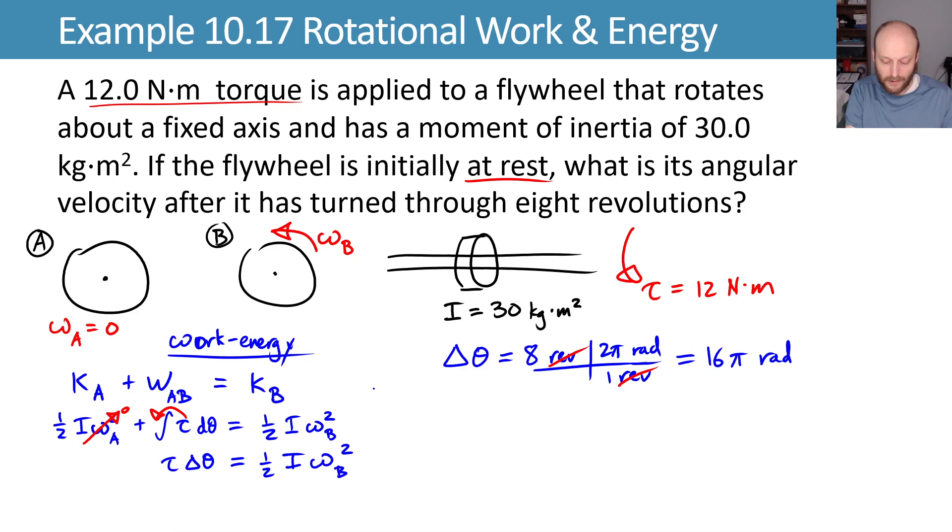That's one equation with one unknown. The only thing we don't know is omega B. We know I, we know torque, we know delta theta. We'll solve that for omega B by multiplying by two, dividing by I, and then taking the square root. That leaves us with omega B equals the square root of two torque delta theta divided by I.